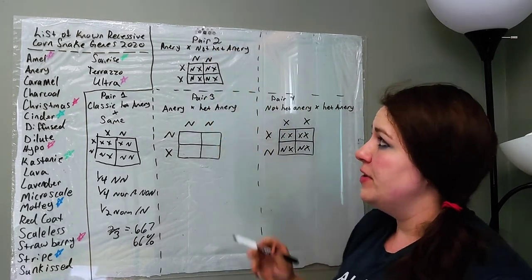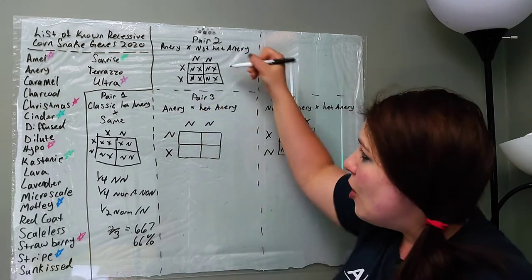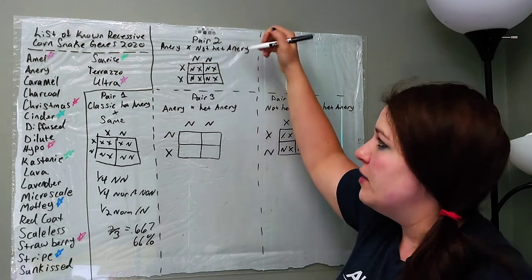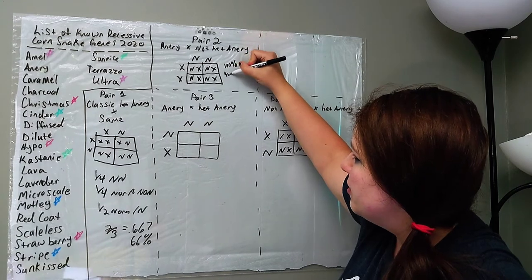So, when you calculate this out, you're going to put the Ns, I kind of did it in the wrong order, but the Ns down, and then the Xs over. And so, here what you have is, when you have a normal that is not het anery, and you breed it to an anery, all babies, 100% of them, are het for anery. So, 100% het anery.